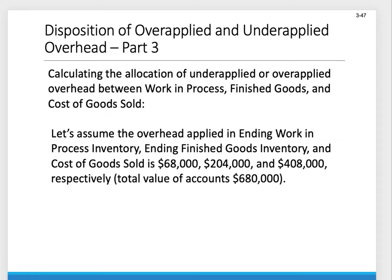The other acceptable way is to allocate that overage proportionally between the two inventory accounts and cost of goods sold. Let's assume that the overhead applied in ending WIP inventory, ending finished goods inventory, and cost of goods sold have ending balances of $68,000, $204,000, and $408,000 respectively. The total of all these is $680,000. So we're going to proportionally allocate that $30,000 overage — with WIP at a rate of $68,000 divided by $680,000.